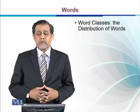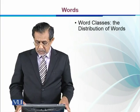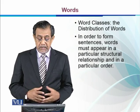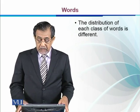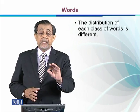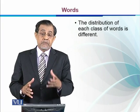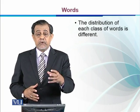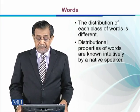Word class distribution — how do we know that a word fits into a certain slot and another word does not? This is an important aspect of learning language. In order to form a sentence, words must appear in a particular structural relationship and in a particular order. The distribution of each word class is different. We know where an adjective, noun, or verb is to be used in English, and distributional properties of words are known intuitively by a native speaker.